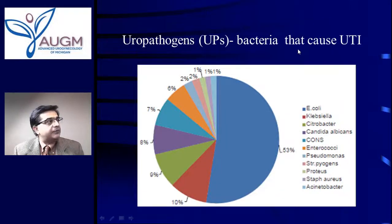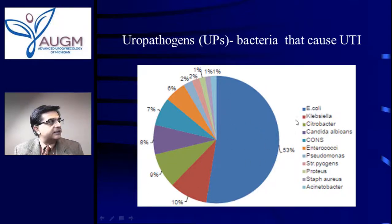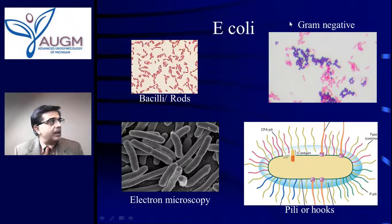When we talk about a bladder infection, let's discuss the bacteria that cause this, called uropathogens or UPs. The most common uropathogen is E. coli, the number one bug that causes bladder infections in more than 50% of patients. It is a gram-negative rod or bacillus, and this is how it looks on electron microscopy.